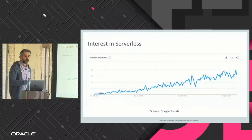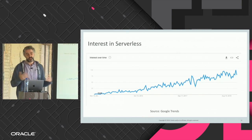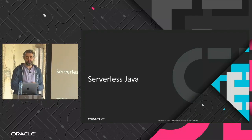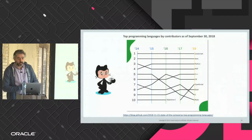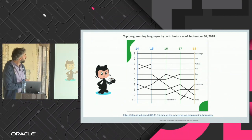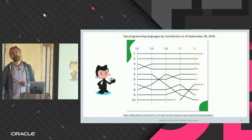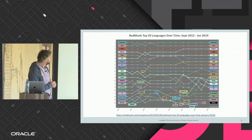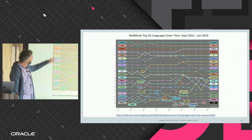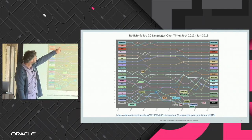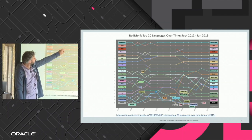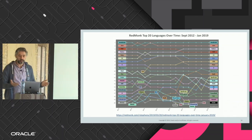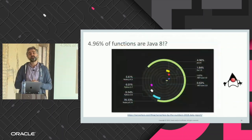If we look at the market, there's clearly a strong interest in the serverless and FaaS space. But what about Java? We all know Java is very popular — on GitHub it's the second most used programming language, having been first or second since at least 2012. So what about Java within the serverless space?